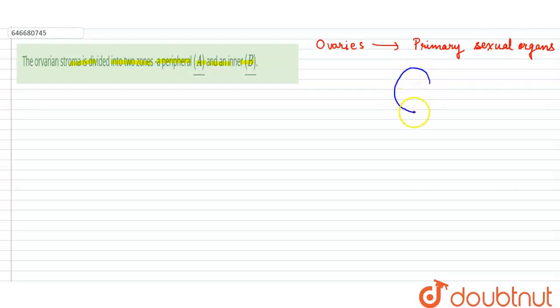Suppose this is the ovary. It has an epithelium layer like this, you can see a singular layer of epithelium, like this. And this epithelial layer encloses the ovarian stroma. So coming to the coverings, first is the epithelial layer.